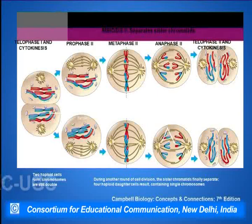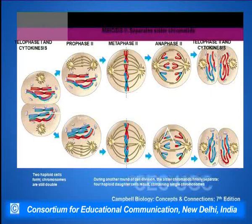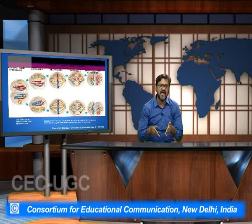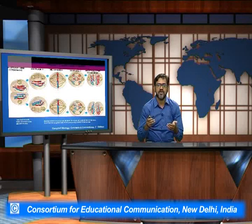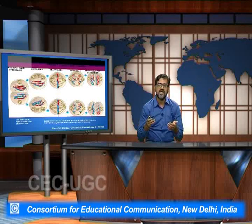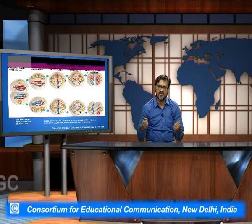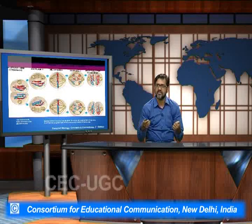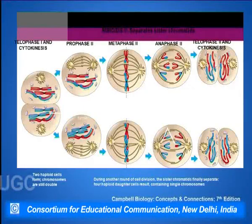Subsequently, meiosis 2 starts taking place with prophase 2, then metaphase 2, anaphase 2, and subsequently telophase 2 and cytokinesis. In prophase 2, the cell gets prepared for the next phase of division. In metaphase 2, each of these chromosomes start getting aligned in the equatorial plane. Again the spindle fibers come and get attached to the centromeric positions in the chromosomes, and in anaphase 2 each of these non-sister chromatids start moving towards the opposite poles.